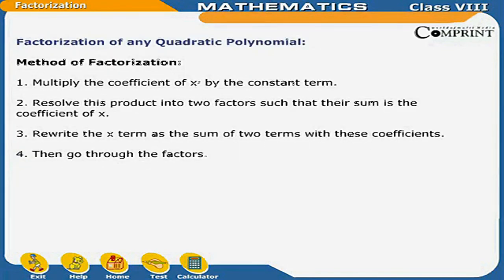Factorization of any quadratic polynomial. Method of factorization: 1. Multiply the coefficient of x square by the constant term. 2. Resolve this product into two factors such that their sum is the coefficient of x. 3. Rewrite the x term as the sum of two terms with these coefficients. 4. Then go through the factors.